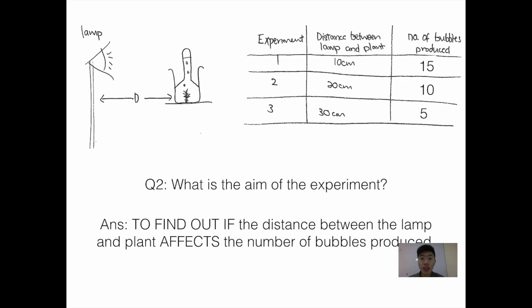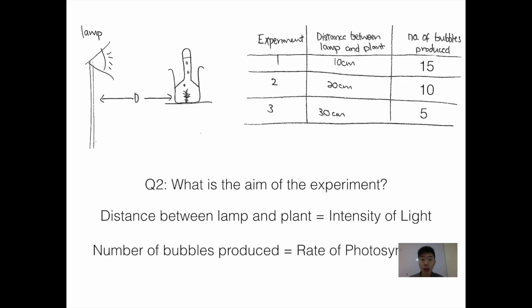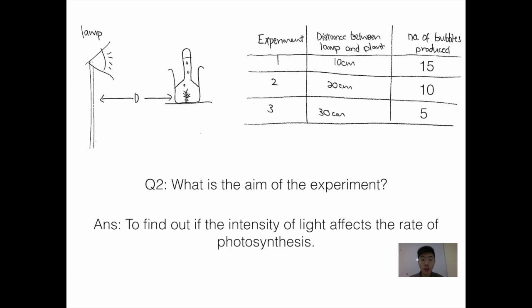However, this is a higher level thinking skills question where we need to think a little bit further. What is the distance between the lamp and the plant representing? Distance between lamp and plant represents intensity of light. Number of bubbles produced represents the rate of photosynthesis. So the accurate answer is: to find out if the intensity of light affects the rate of photosynthesis.